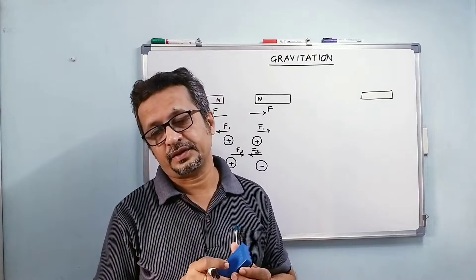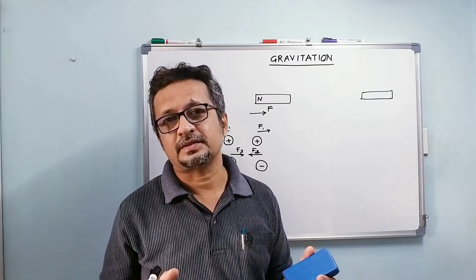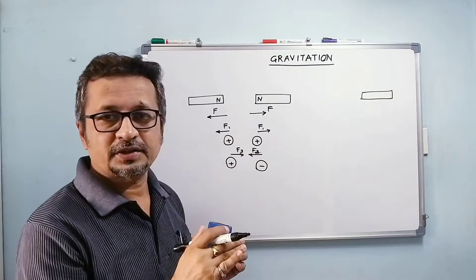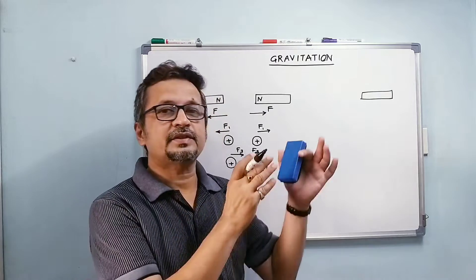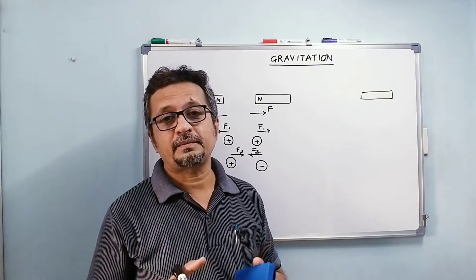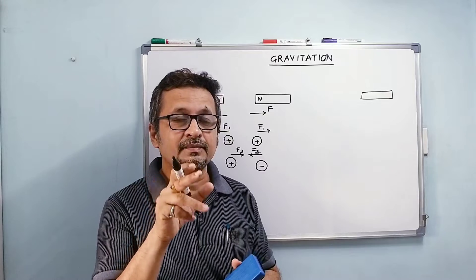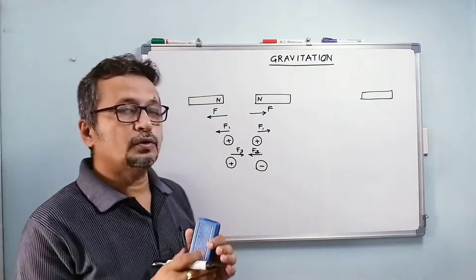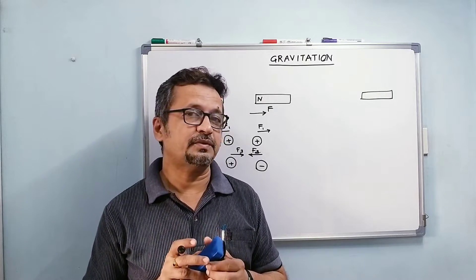Another important property of the force of gravitation is that it is independent of the material medium prevailing between the two masses. Compare that with magnetic or electrostatic force — if some material medium separates two charges, the force experienced would be different. Whether both charges are in vacuum, in water, in oil, or separated by some insulating material like asbestos, the electrostatic force changes depending on the nature of the medium. In gravitation, nothing like that happens — gravitational force is independent of any material medium between the two masses.